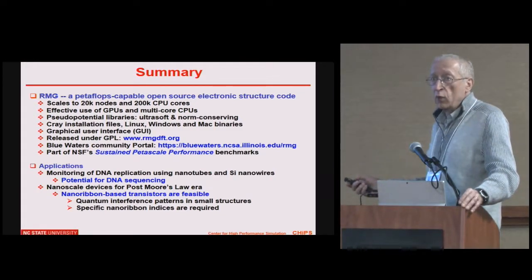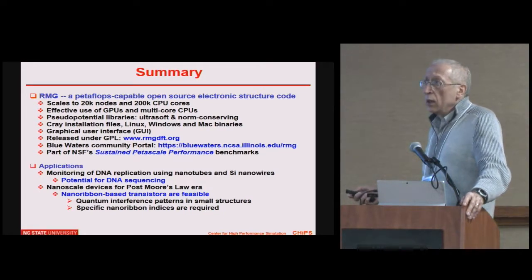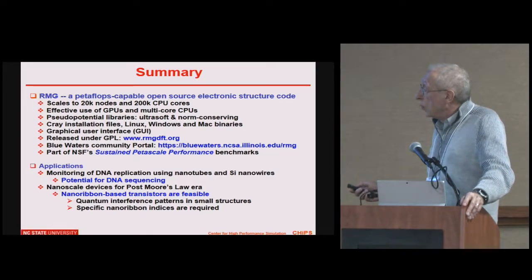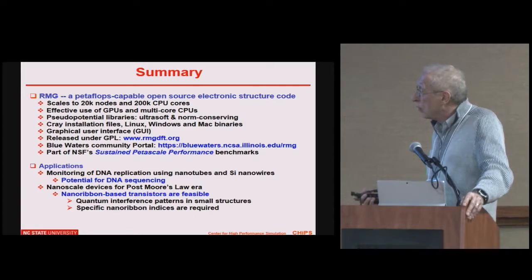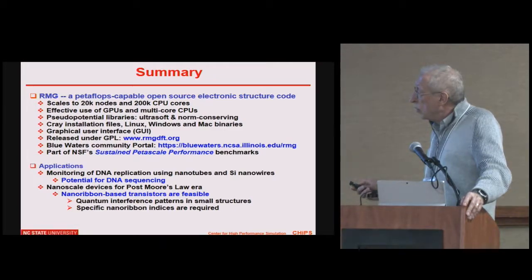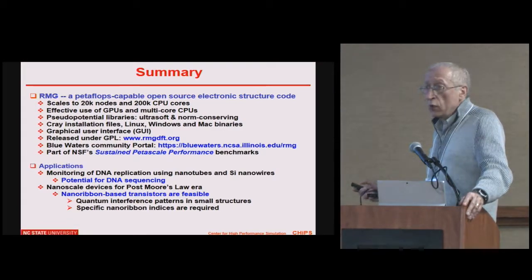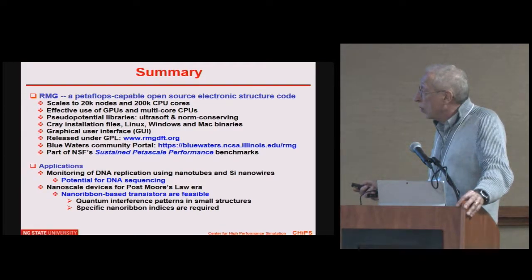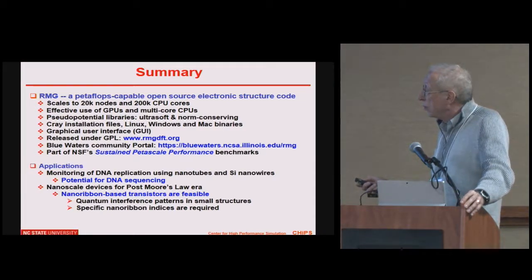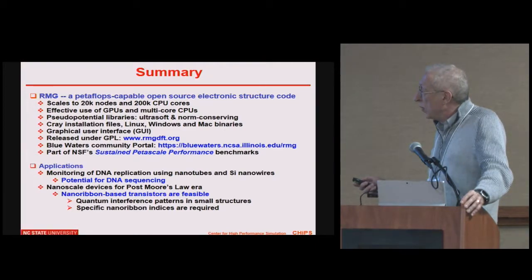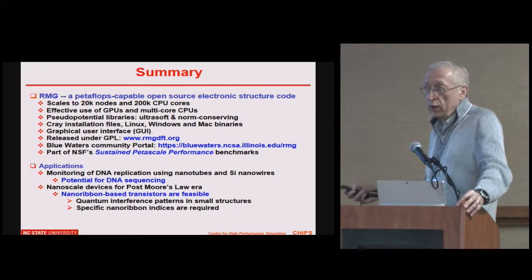Let me give you a summary. We have a petaflops-capable open-source electronic structure code that you are welcome to use. It scales to 20K nodes, 200K CPUs, with one GPU per node and multiple GPUs per node both working well. We provide Cray installation files on Blue Waters where it's already installed, as well as Linux, Windows, and Mac binaries and sources so you can install it on your own system. If you have trouble, contact us.